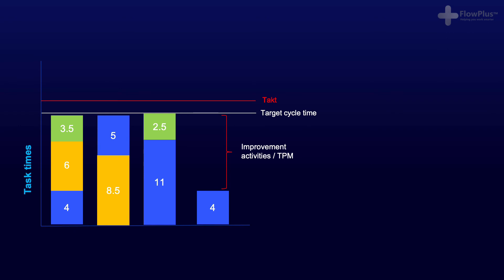This fourth partially loaded operator is known as a MURA operator. They absorb all the variation themselves to enable the other three operators to carry on with their process.